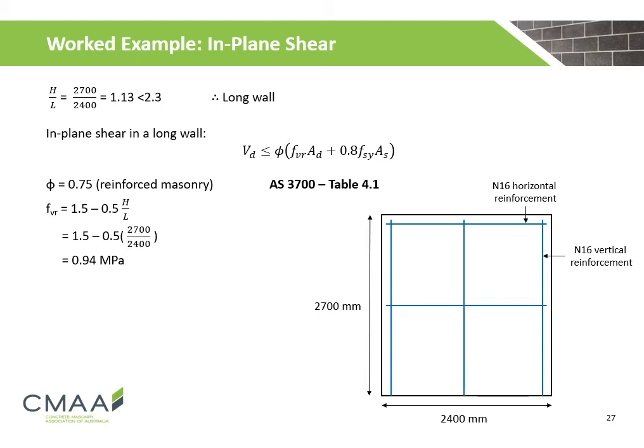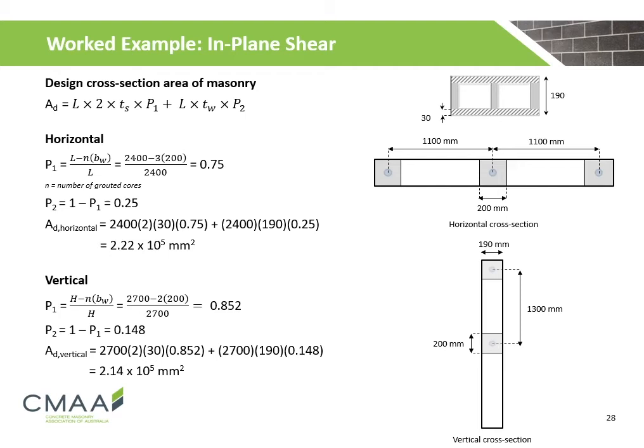The aspect ratio of the wall is calculated to be 1.13, which is less than 2.3. Therefore this wall is classified as a long wall, and the following equation for in-plane shear in a long wall is used. The capacity reduction factor phi is 0.75, obtained from table 4.1 of AS3700. Using this aspect ratio, the effective shear stress is calculated to be 0.94 MPa.